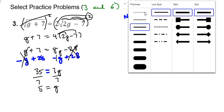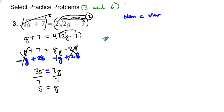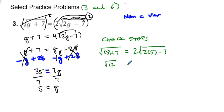So now let's grab a different color here, and let's do my check steps. I guess it would be because it's not just one step. So we're going to go the square root of 5 plus 7. I'm going to show it by using the parentheses, and then 2 times 5, because it's 2g, so 2 times whatever g is, and g is 5, minus 7. So this gives me the square root of 12 equals 2 times the square root of 10 minus 7.